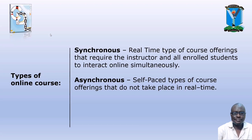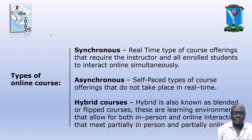Students are provided with content and assignments and are given a timeframe to complete coursework and exams. Interaction usually takes place through discussion boards, blogs and wikis. Asynchronous online learning environments are effective for students with time constraints or busy schedules. The third type is Hybrid, also known as blended or flipped courses.